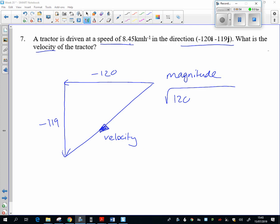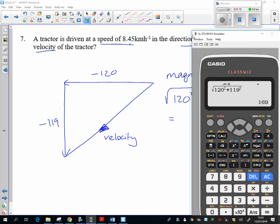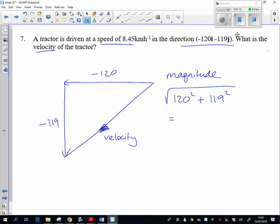It doesn't matter that they're negatives if I'm just after the magnitude of them. So, square root of 120 squared plus 119 squared. Okay, 169, so that's nice. It's come out as an integer.